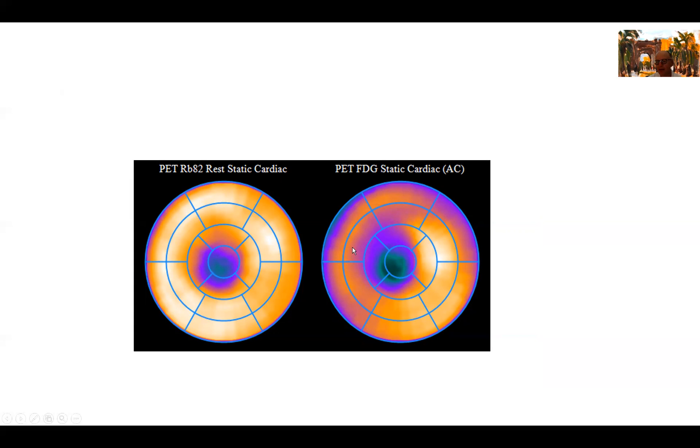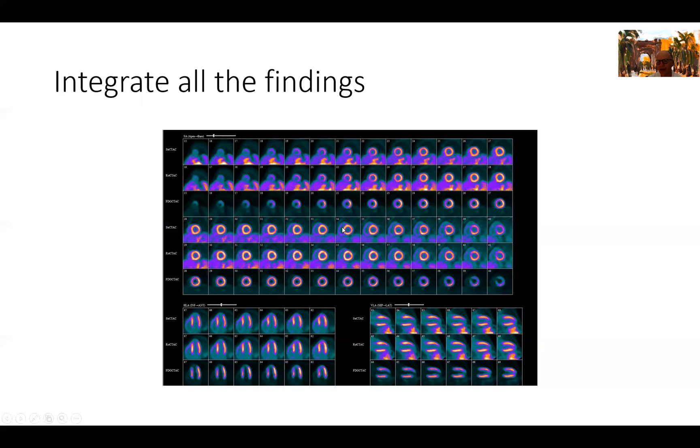Now the rest of the segments, the FDG is not very helpful in a metabolic study done for hibernation because usually you can see variable FDG uptake. The only area we can comment about is the area where we have a defect on the rest images. This is different in cases where we're looking for inflammation or sarcoid, for example.